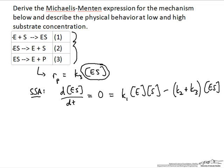Now we need to do some algebra and relate the concentration of free enzyme to the concentration of the enzyme-substrate complex. We can solve for the concentration of free enzyme — it's equal to this collection of rate constants and the concentration of the substrate relative to the concentration of enzyme-substrate complex. So now we can eliminate an unknown: we have an extra equation relating [E] to [ES].